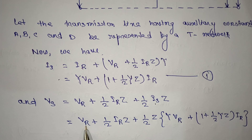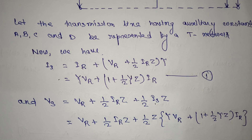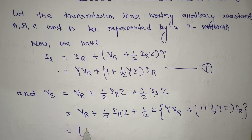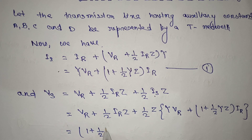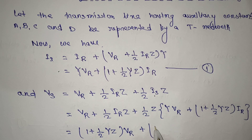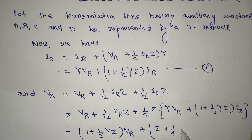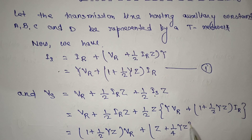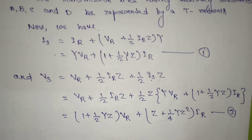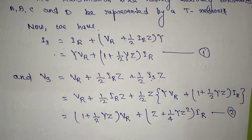You can see VR appears here and IR appears here, so we rearrange the equation. After rearranging, we get VS = [1 + (1/2)YZ]·VR + [Z + (1/4)·Y·Z²]·IR. This is equation number 2.